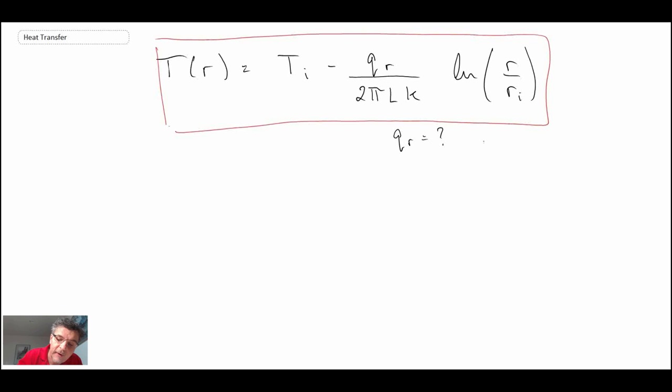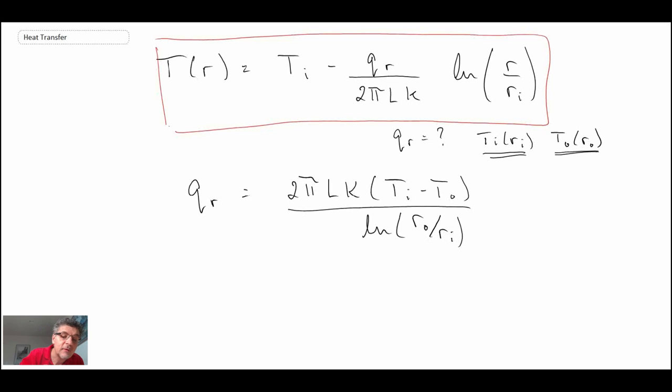Well, we have our boundary conditions. We have ti at ri, and we have t outer at r outer. We've already used this one, so now we're going to use that boundary condition. And when we apply that, we get for qr, we get this relationship here.